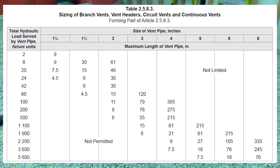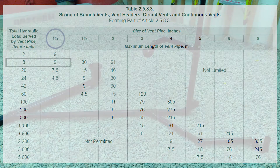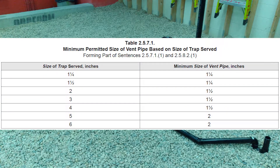I require six fixture units, so I come down on the left-hand side until I get to eight, then across to the right. It says I can have a one and a quarter inch vent pipe with nine meters of developed length, while I only have six — so this should be good.